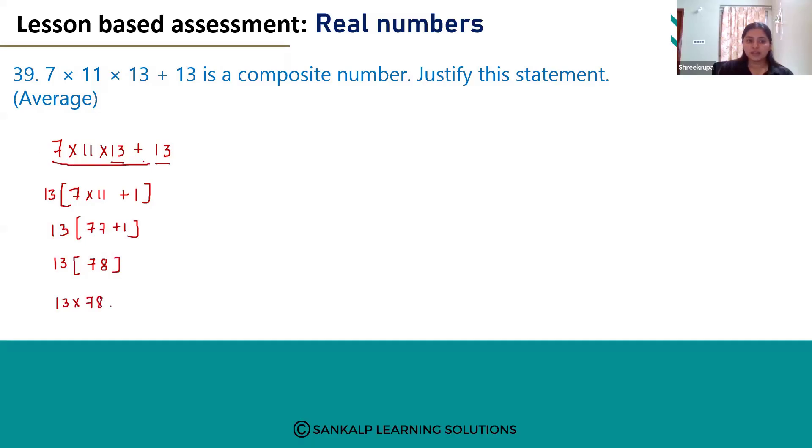This function is converted into 13 into 78. Here, if you see this 13 into 78, 13 is a prime number. A composite number is a number which can be written as the product of prime numbers. Here we have written this function as the product of prime numbers. Even 78 can be written as the product of prime numbers.